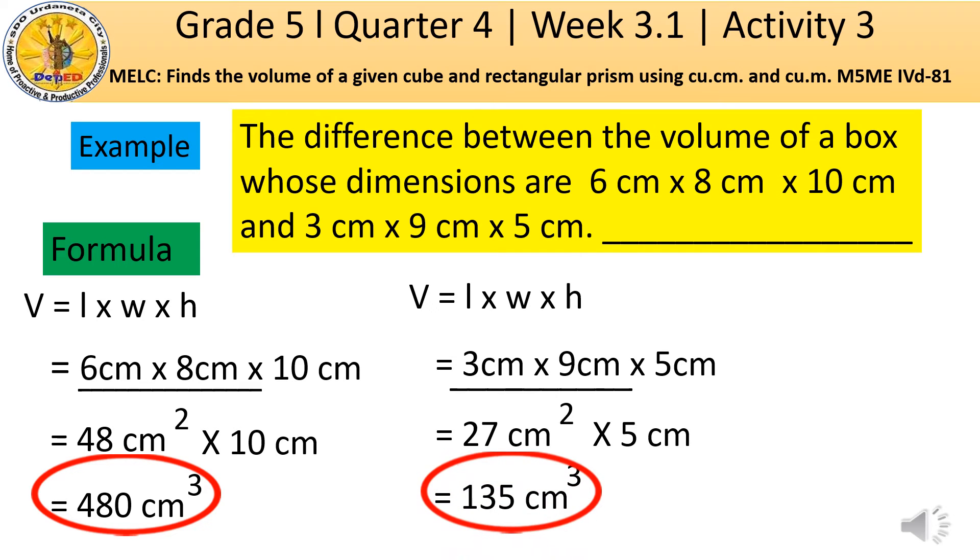Then, let us now get the difference between the volume of a box by subtracting the two products of the volume of a box. So, 480 cm³ will be subtracted to 135 cm³. Then, the answer is 345 cm³. Therefore, the difference between the volume of a box is 345 cm³.